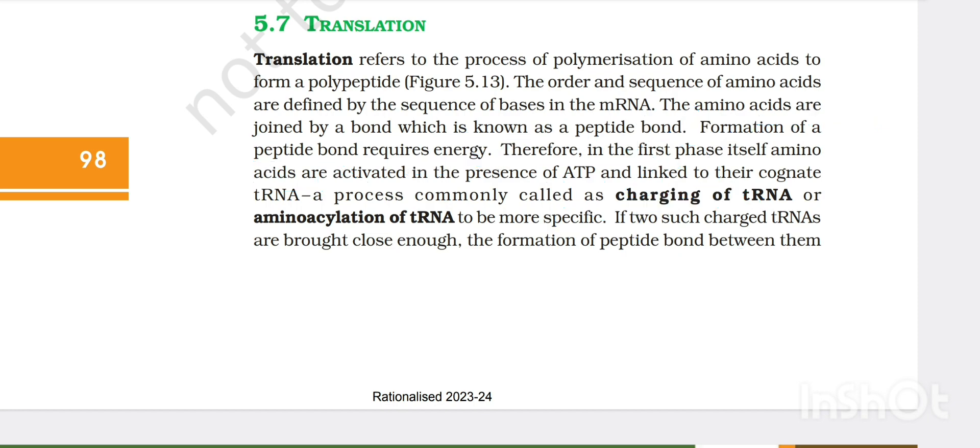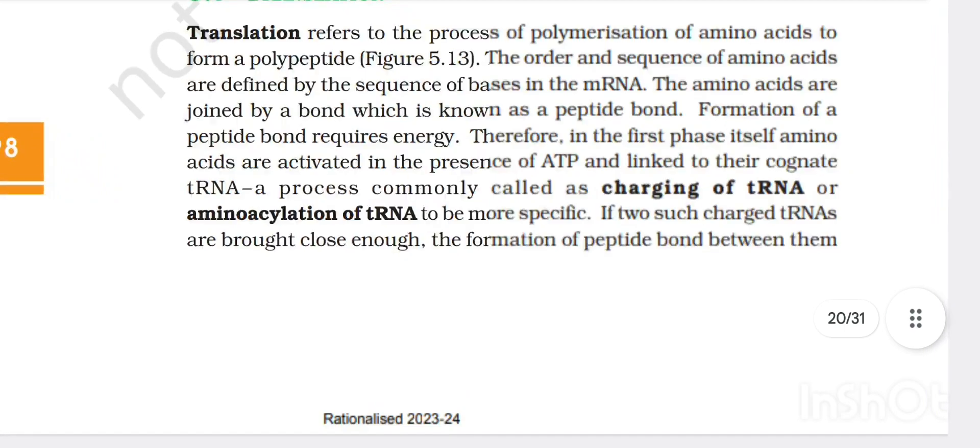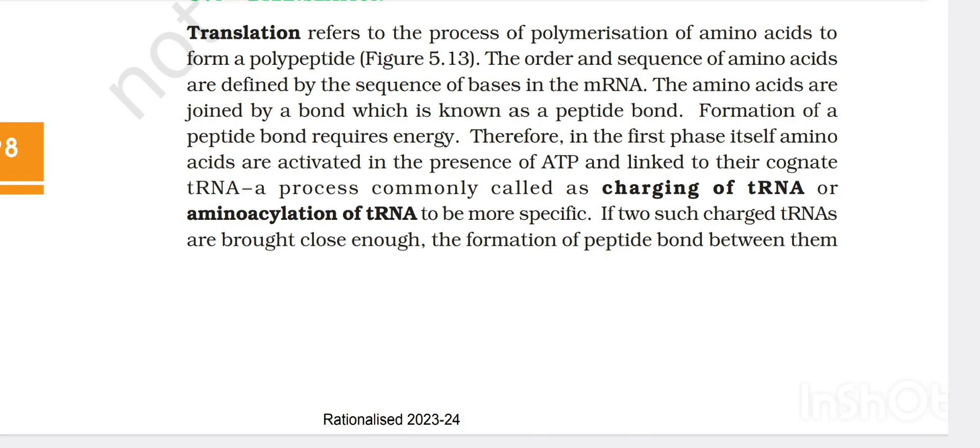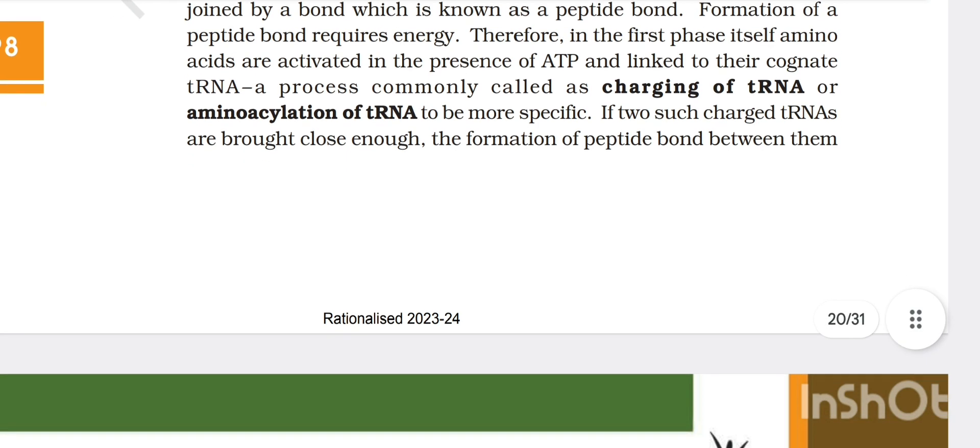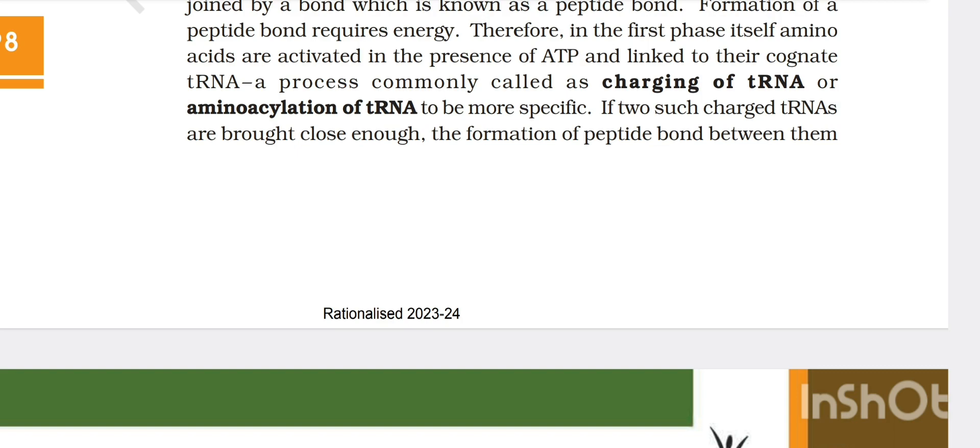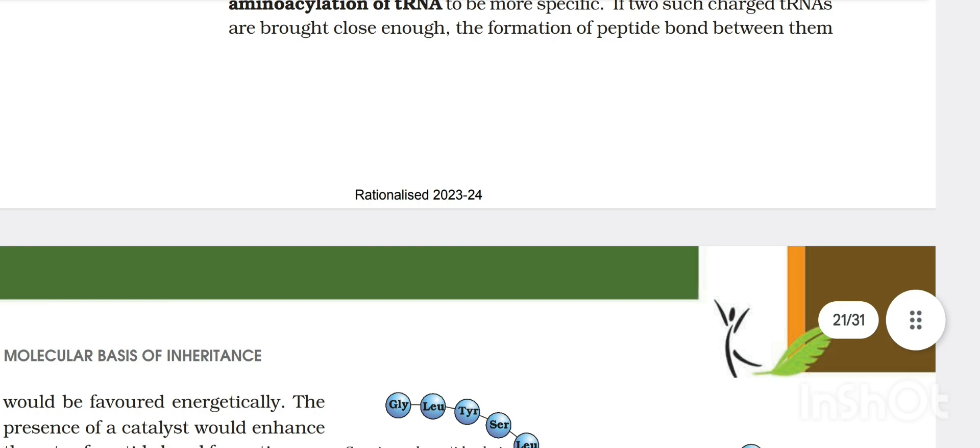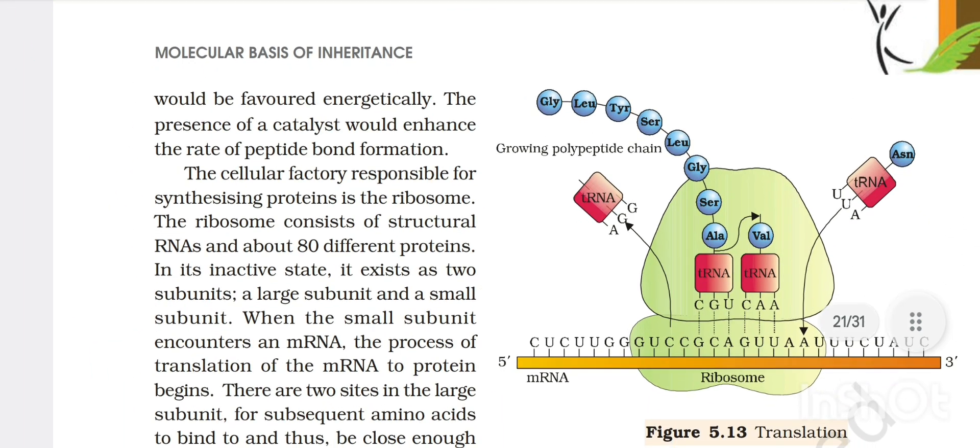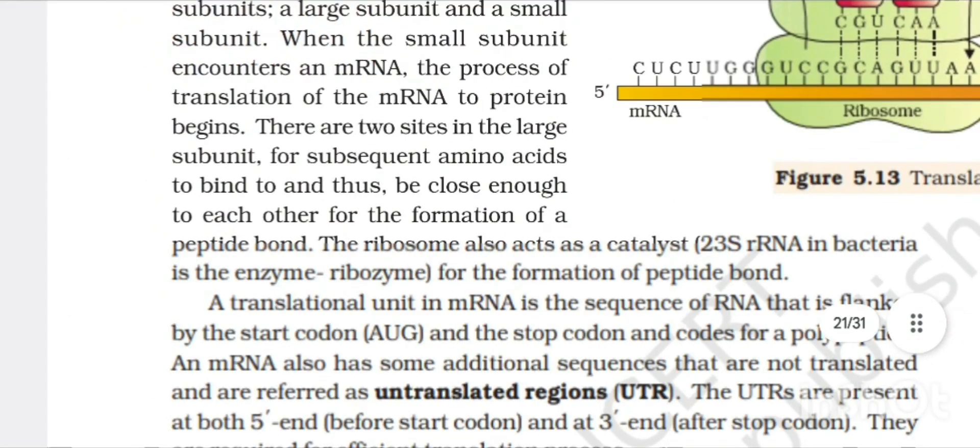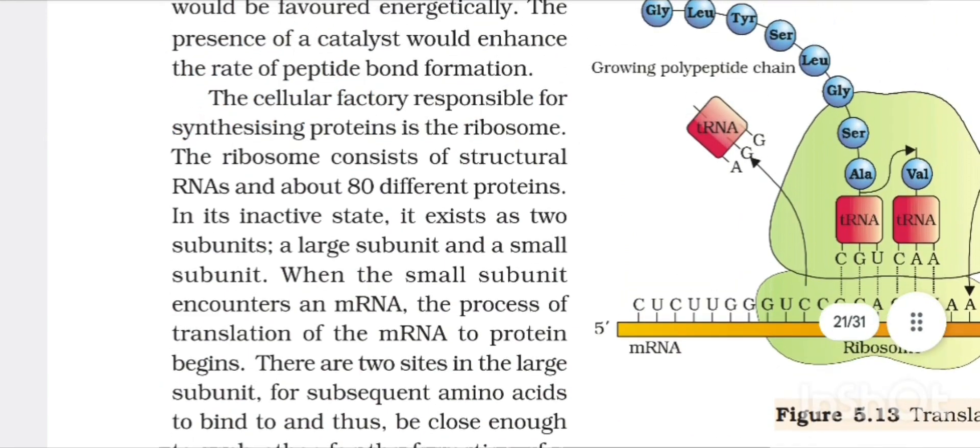Formation of peptide bond requires energy. Therefore, in first phase itself amino acids are activated in the presence of ATP and linked to the correct tRNA, a process commonly called as charging of tRNA or amino acylation of tRNA to be more specific. If two such charged tRNAs are brought close enough, the formation of peptide bond between them would be favored energetically. The presence of a catalyst would enhance the rate of peptide bond formation.